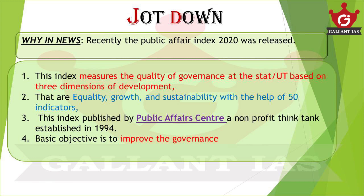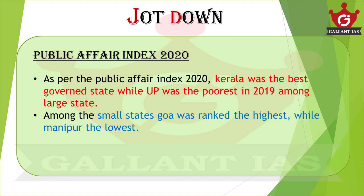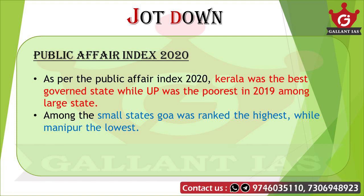Now let's check some important facts related to Public Affairs Index 2020. As per PAI 2020, Kerala was the best governed state while Uttar Pradesh was the poorest among large states. Among small states, Goa was ranked the highest while Manipur was the lowest. Please take note of this data as it is important for your Prelims.